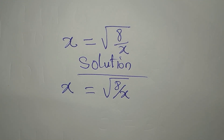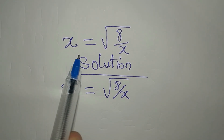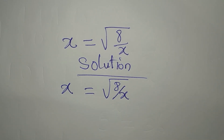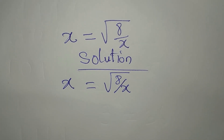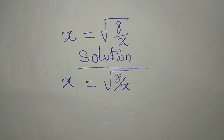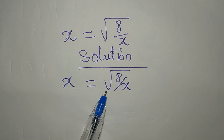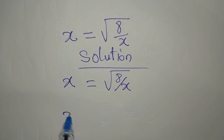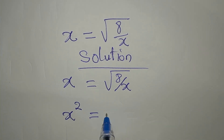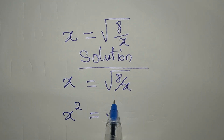Hello everyone, we are to solve x equals the square root of 8 over x. If you're new to my channel, consider subscribing so you can get more of my videos. The first step is to remove this root, so we're going to square both sides so that this root can be removed.